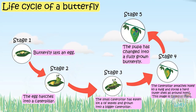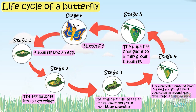Stage 5: after spending a lot of time in this cocoon, the pupa changes into a fully grown butterfly which starts to come out of its cocoon. Stage 6: a beautiful butterfly appears. So kids, we learned the life cycle of a butterfly.